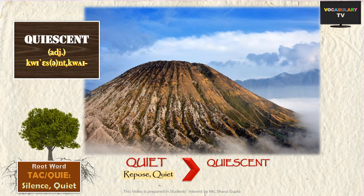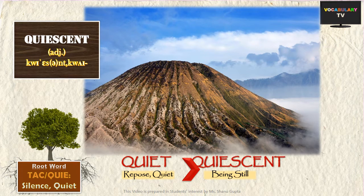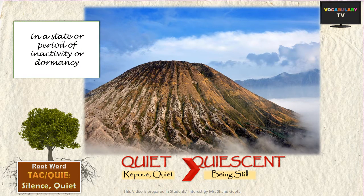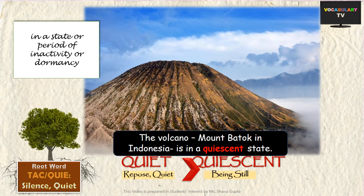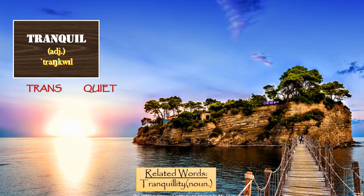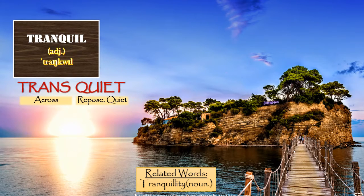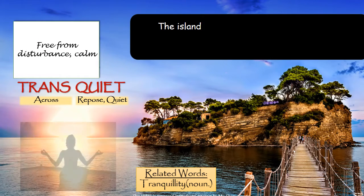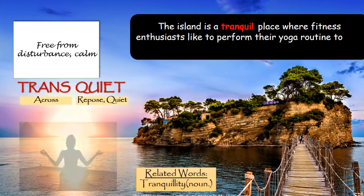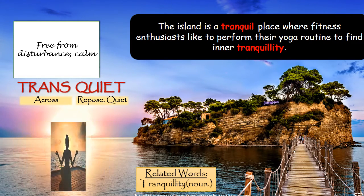The next word is QUIESCENT, which literally means to be still or quiet. Quiescent describes something in a state or period of inactivity or dormancy — for example, an inactive volcano could be called a quiescent volcano. And while the origin is not certain for the word TRANQUIL, it is very likely derived from the same root QUI. Tranquil describes a state where there is peace and quiet all around — when something is free from disturbance or is calm, it could be called tranquil. The related noun is TRANQUILITY. For example: the island is a tranquil place where fitness enthusiasts like to perform their yoga routine to find inner tranquility.